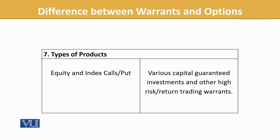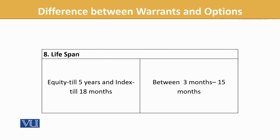Types of product — in options we have equity and index calls and puts. In warrants, there are various capital guaranteed investments and other high-risk return trading warrants. So we discussed earlier that the risk-return element is higher here. It is not as simple as just calls or puts — we also have guaranteed or covered instruments.